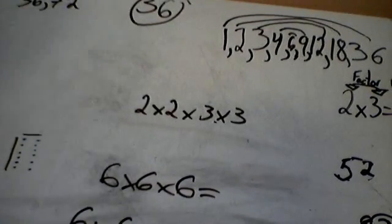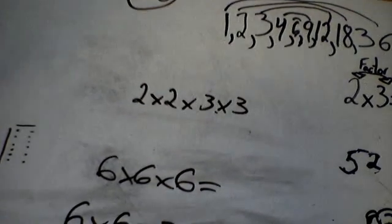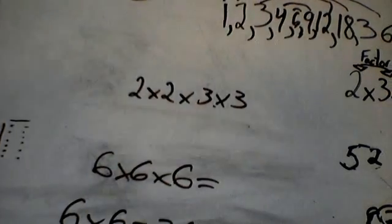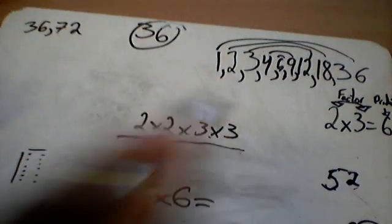These are the multiples of 36. 36 plus 36 is 72. 72 plus 36, and on and on and on. This is the factor strength of 36.